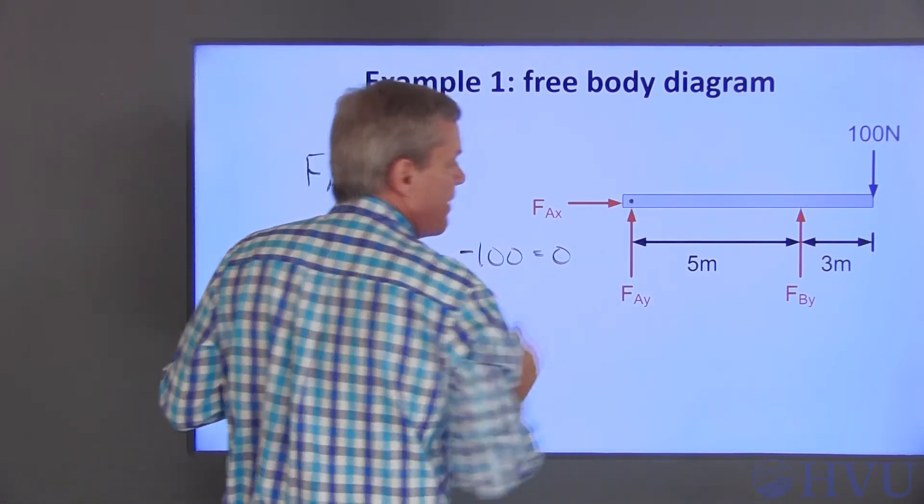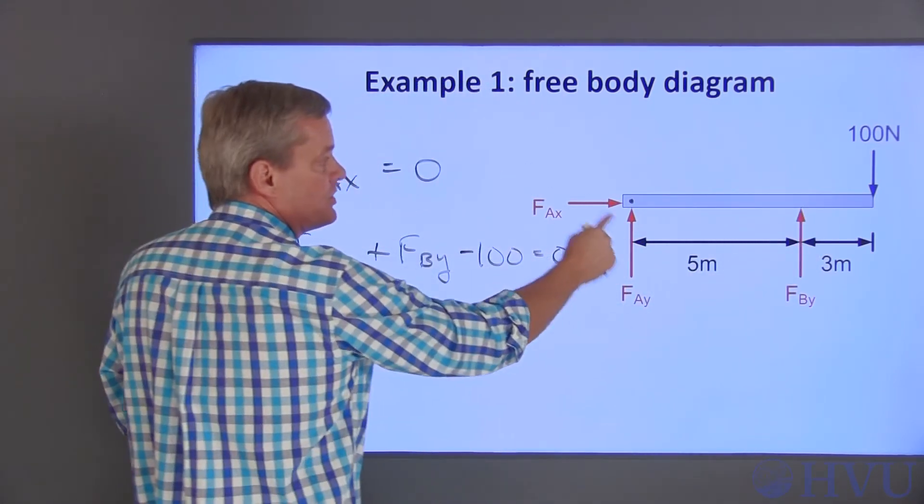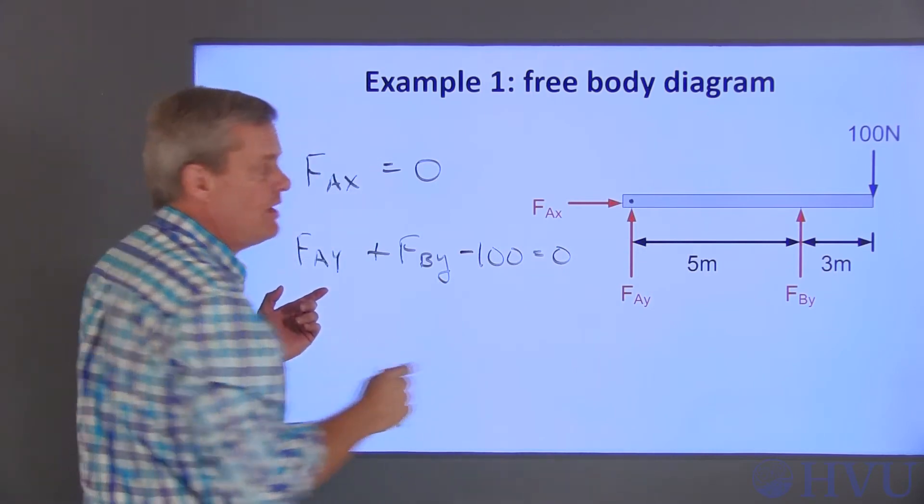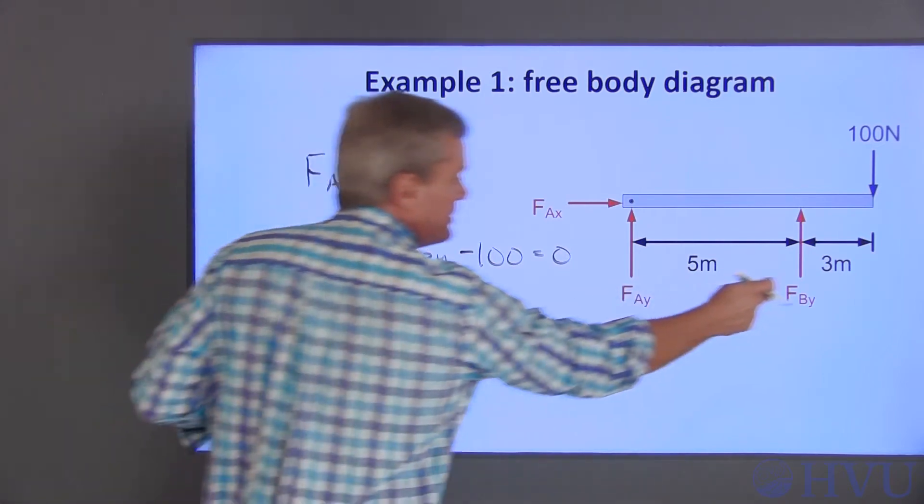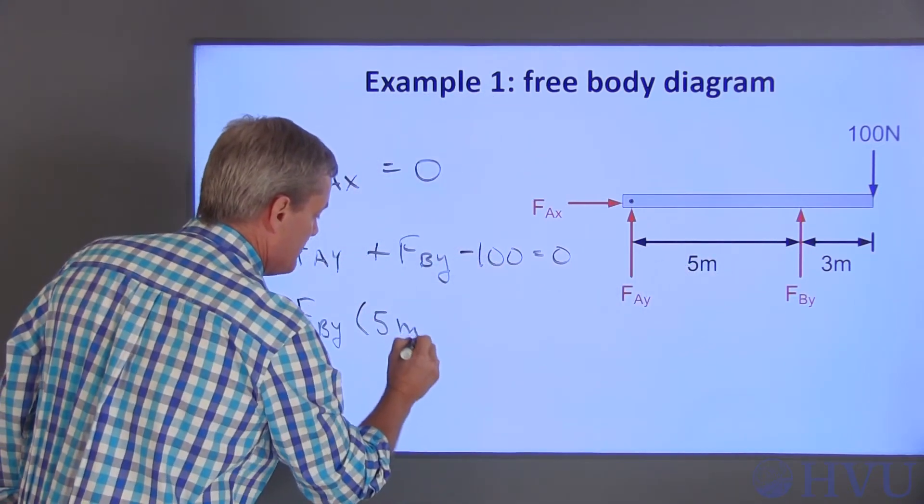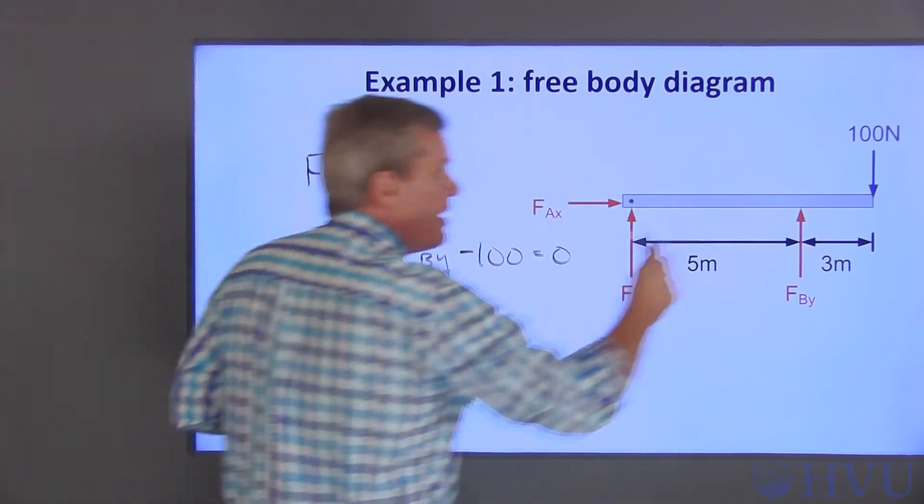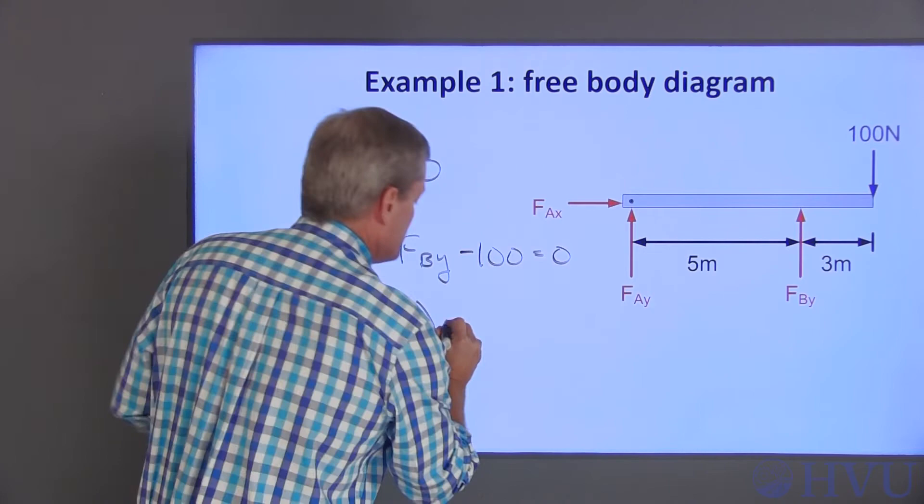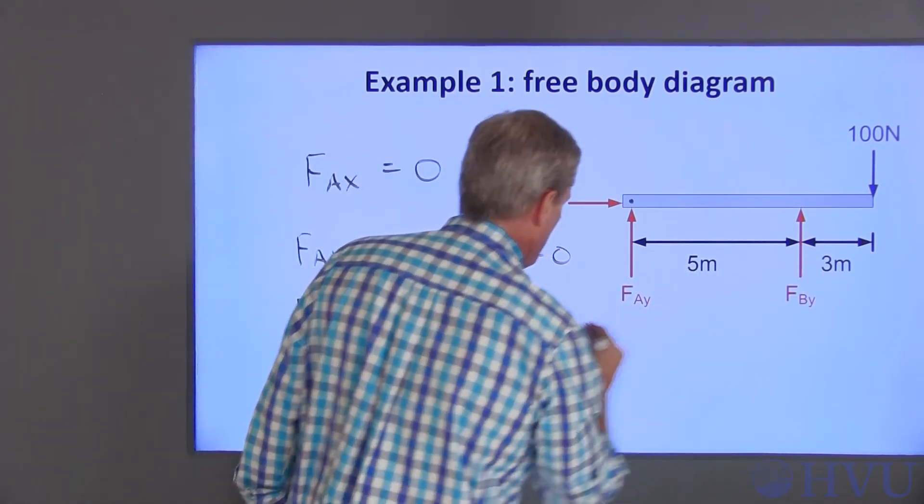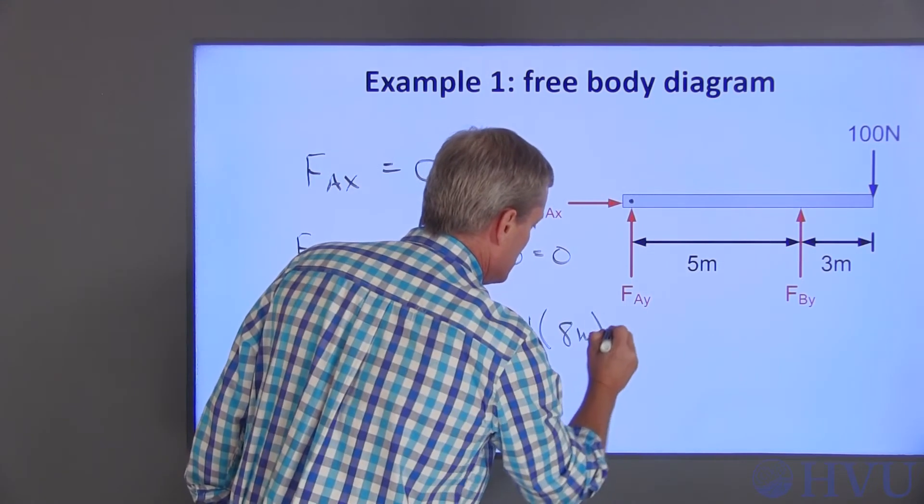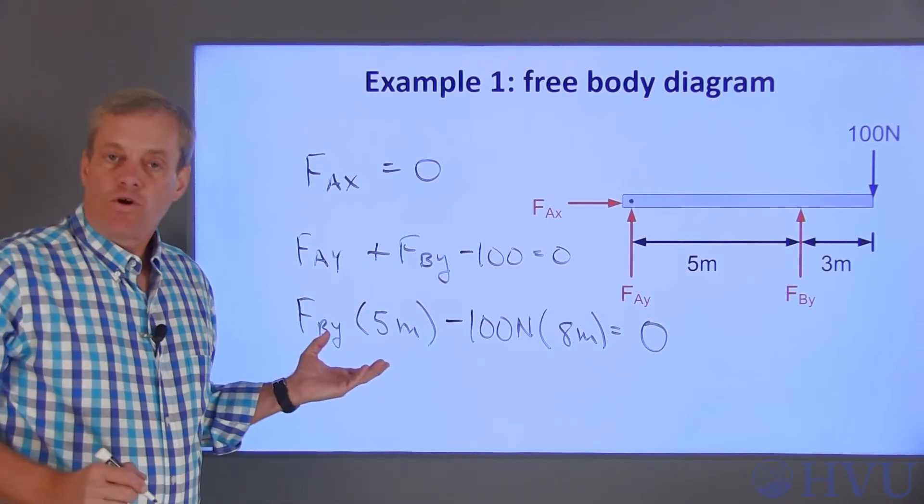Now I'm going to sum moments around this point. Moments are a force times a moment arm. The contributions from these two forces are zero. This FBY provides a moment, which is FBY times its moment arm, which is five meters. I'll claim that that's a positive contribution. The 100 Newton force causes a moment in the opposite direction, so that's negative. 100 Newtons times its moment arm, which is eight meters, sums to zero. Now I've got the equations. Next, I'll put them in matrix form and solve them.